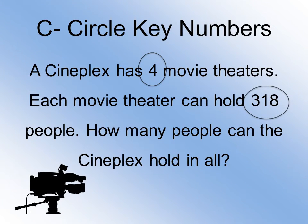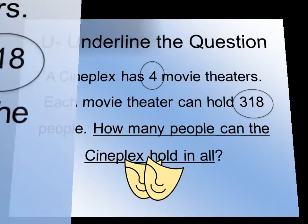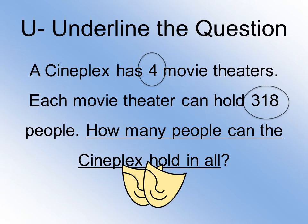First we need to circle the key numbers. We know that the cineplex has four movie theaters, so we're going to circle the number four. And each movie theater can hold 318 people, so we're going to circle that number as well. Next we're going to underline the question. We can always look towards the question mark, because we know that definitely is asking us a question. So right there it says: how many people can the cineplex hold in all?